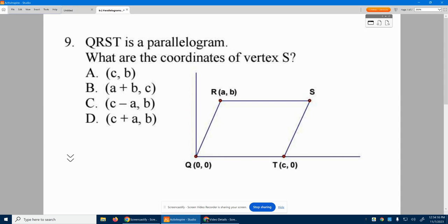Number nine is a great problem. QRST is a parallelogram. If it's a parallelogram, we know opposite sides are the same length. Opposite angles are going to be congruent.